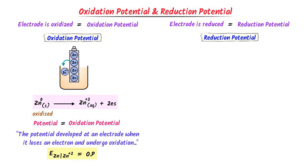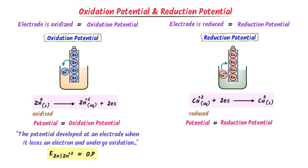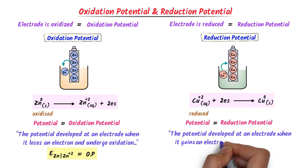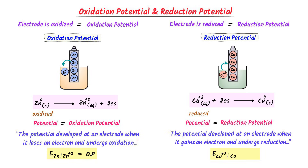Now we will learn reduction potential. Consider the copper electrode: copper²⁺ ions gain 2 electrons to become solid copper, which is deposited on the copper electrode. The oxidation state of copper decreases from plus 2 to 0, hence it is reduced. The potential difference at an electrode when it gains electrons and undergoes reduction is called reduction potential, written as electrode potential E. Copper²⁺ ions gaining 2 electrons to become copper gives the reduction potential.